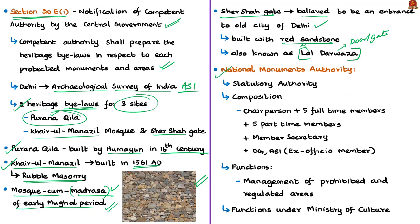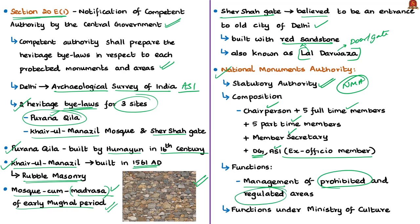The National Monuments Authority has been formed as per the AMASR Act of 2010 and is therefore a statutory authority. As per the act, NMA is constituted with a chairperson, up to five full-time members, five part-time members and a member secretary. The act mandates the Director General of ASI to be the ex-officio member. NMA manages prohibited and regulated areas around centrally protected monuments, considers grant of permissions for construction in these areas, and functions under the Ministry of Culture.